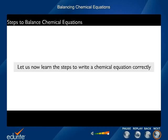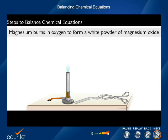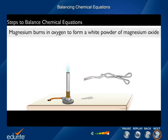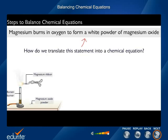Let us now learn the steps to write a chemical equation correctly. We know that magnesium burns in oxygen to form a white powder of magnesium oxide. How do we translate this statement into a chemical equation?